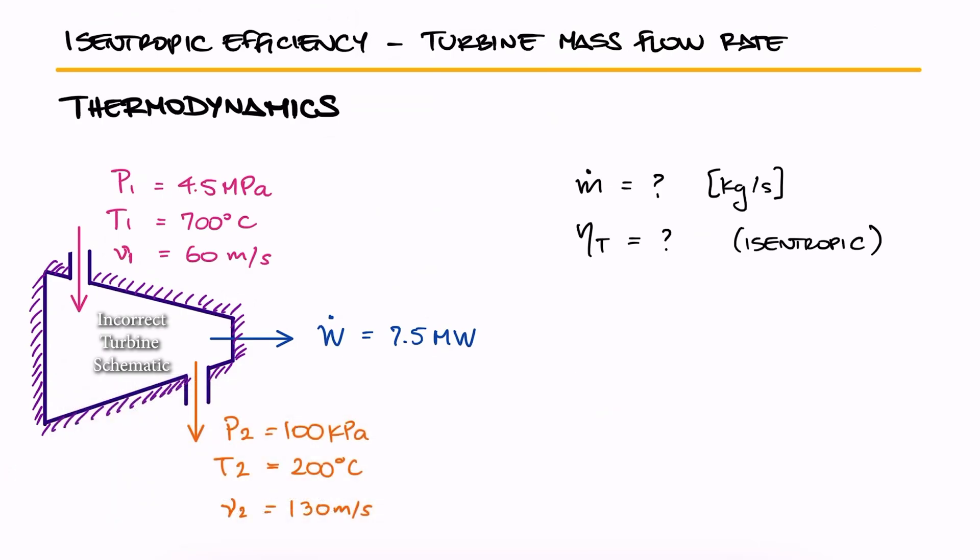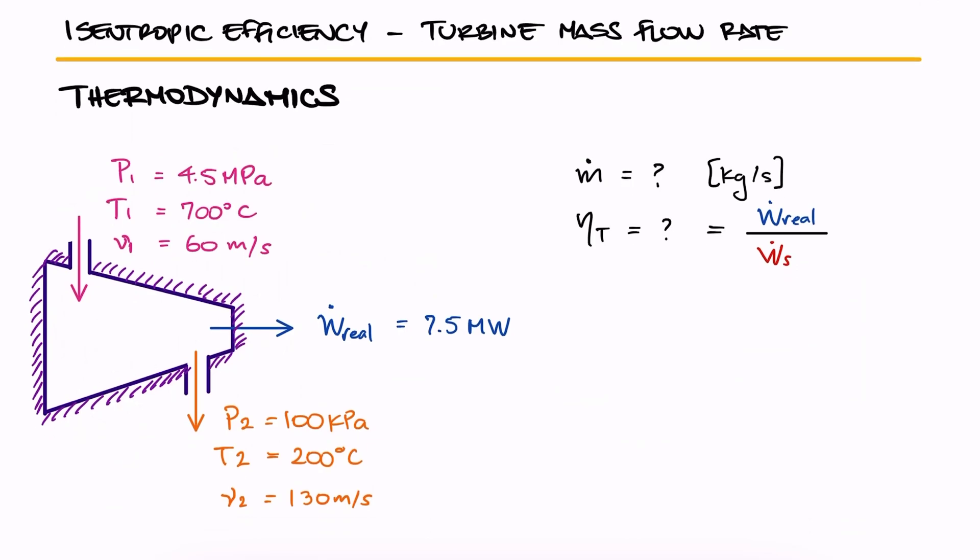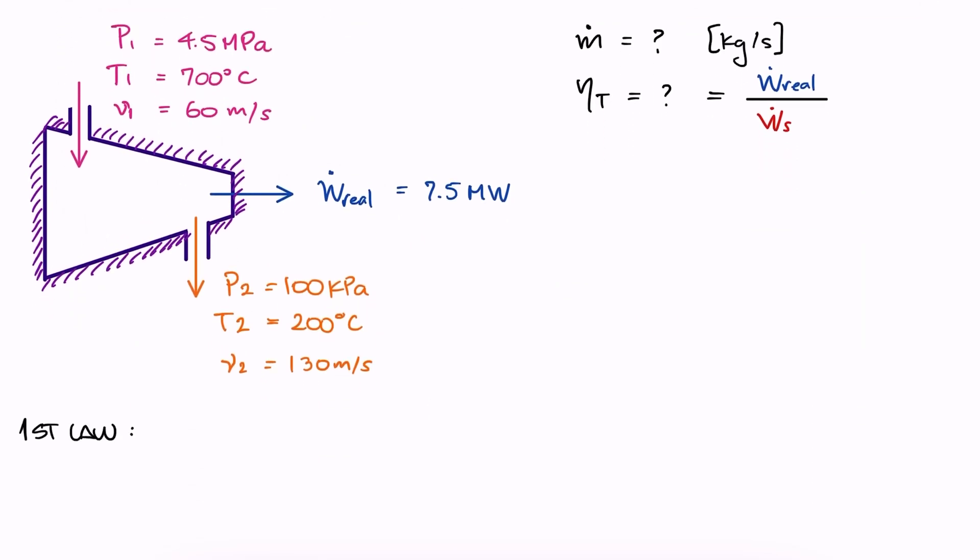The isentropic efficiency of turbines was defined in the main lecture video as the actual turbine's output over the isentropic turbine's output. From the first law, we have that the energy in is mass flow rate times specific enthalpy and the kinematic term at the entrance, and that the energy out is that work output plus the mass flow rate times the specific enthalpy and the kinematic term at the exit.